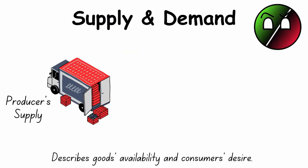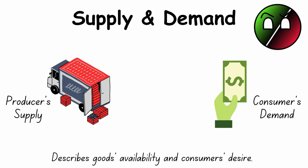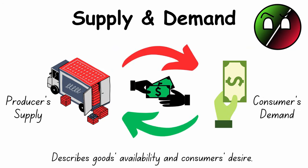Supply and Demand describes goods availability and a consumer's desire. It's the relationship between a producer's supply and a consumer's demand, which generates profit.